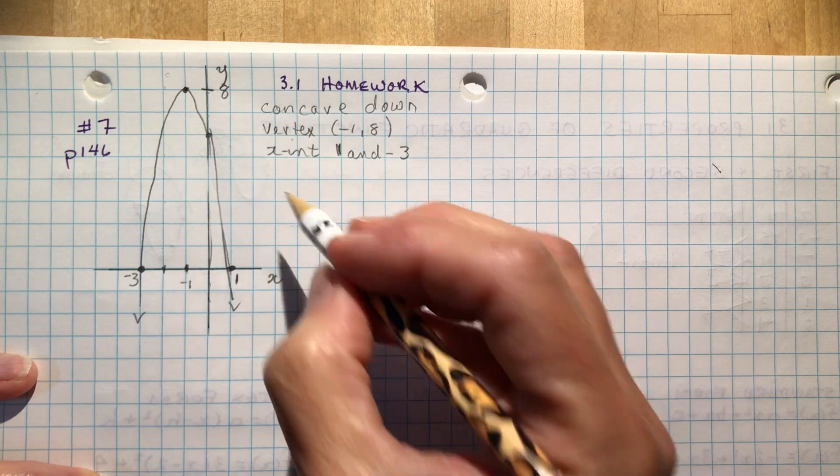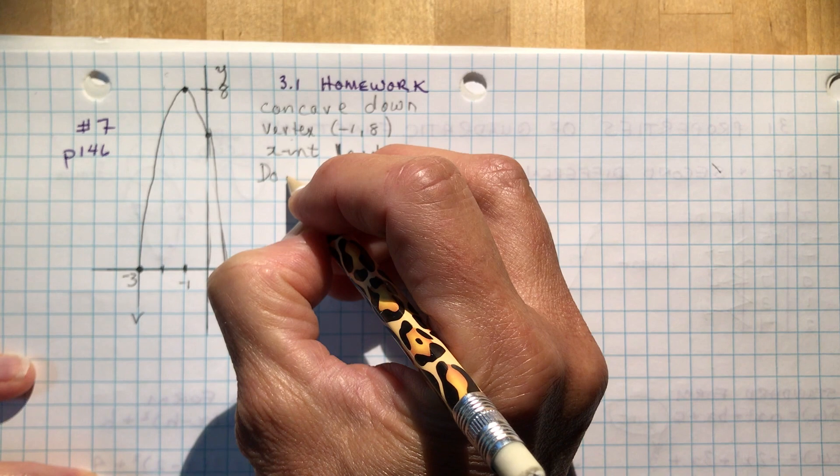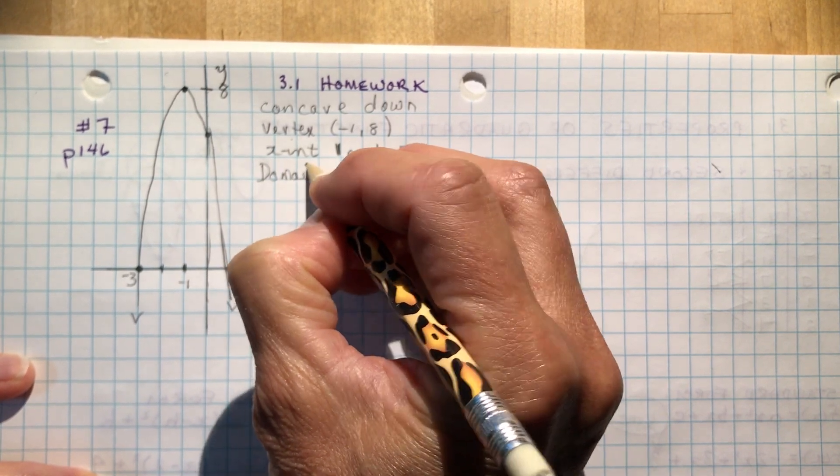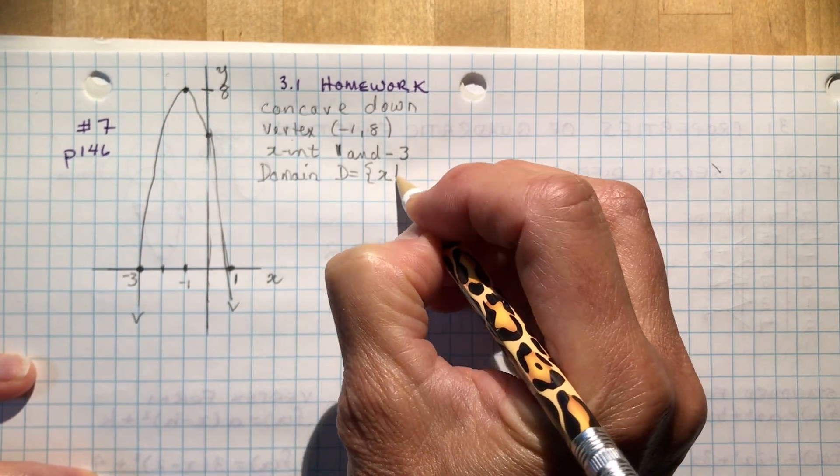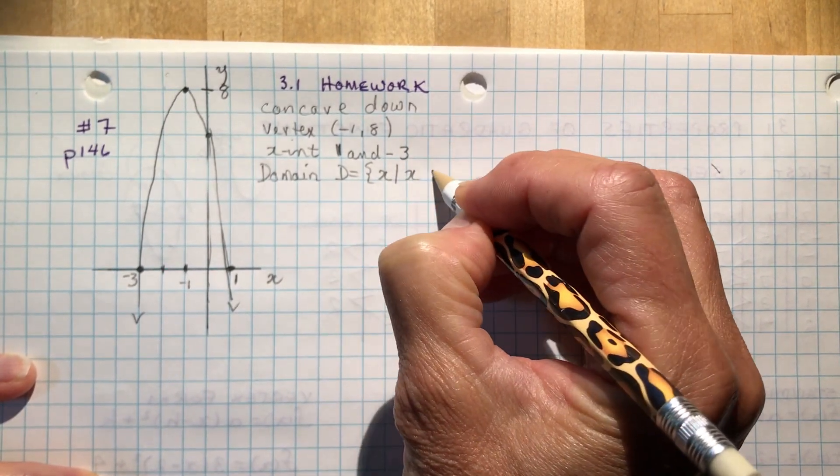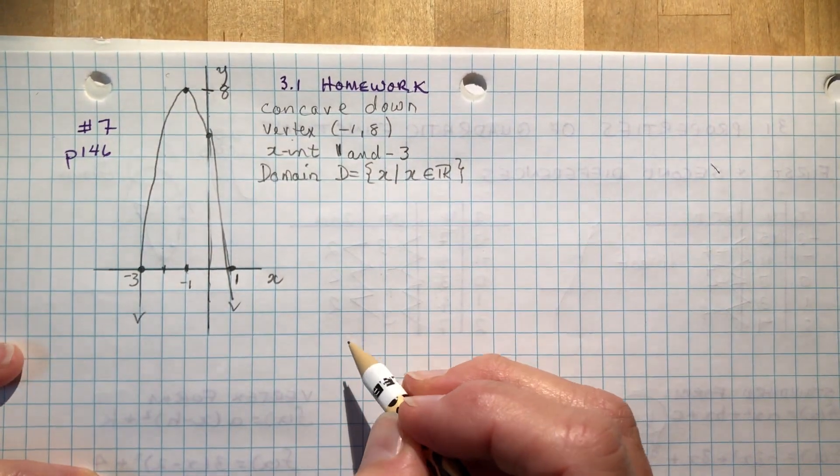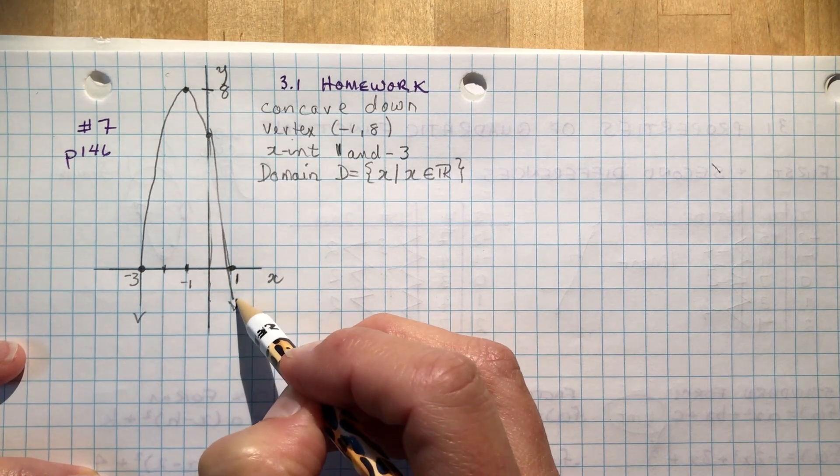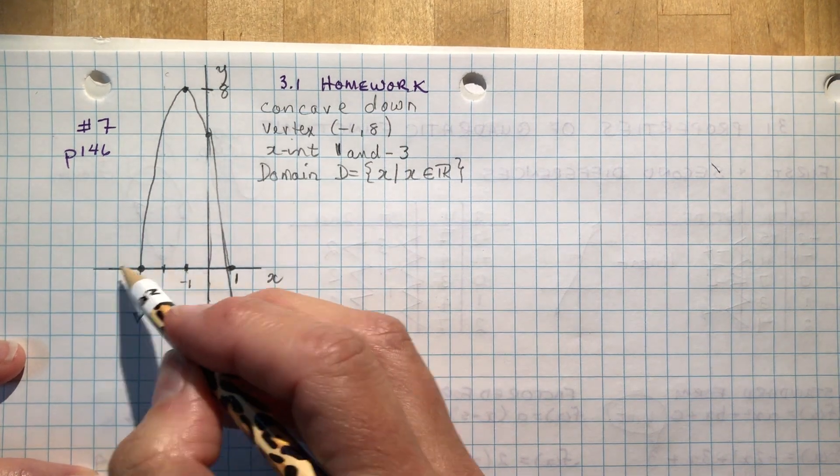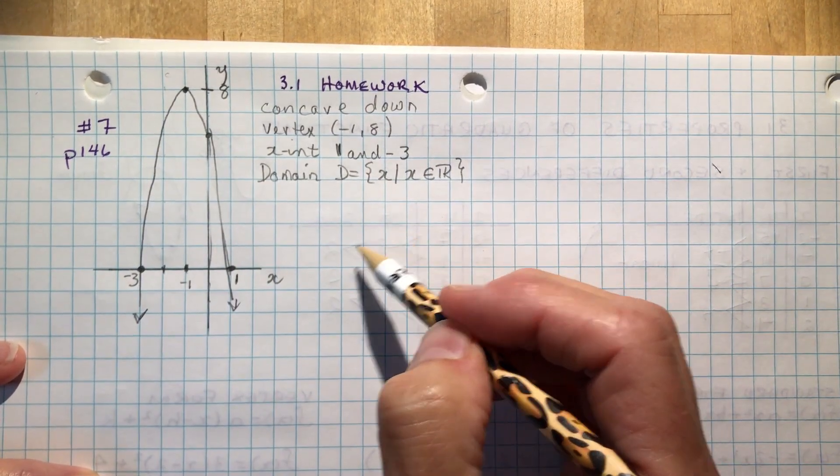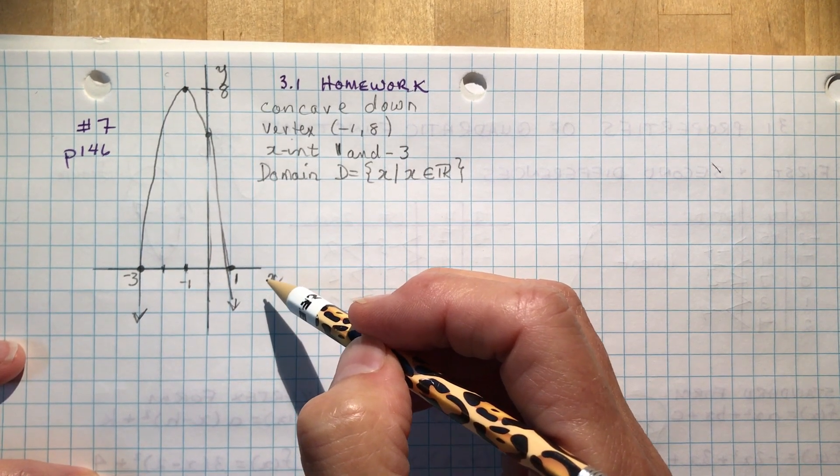The domain and range. Okay, so the domain. Remember, that's what values can I put in for x. So it's going to be x is an element of real numbers. This is not a word problem. It's a parabola. So you can plug in any value. See how there's arrows on the end of this graph? It means the x-coordinates continue. I can use any value for x and get some answer for y, even if it was minus 3 and minus 200. It's still there. That's the domain.